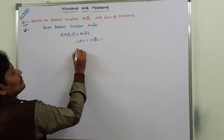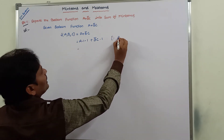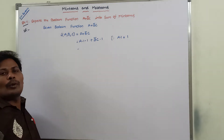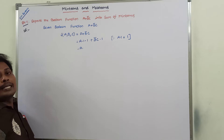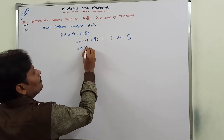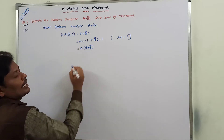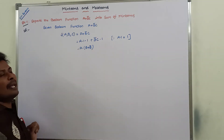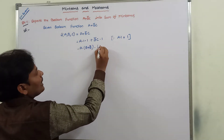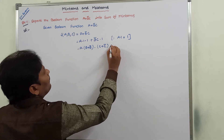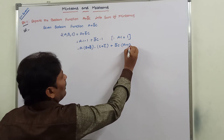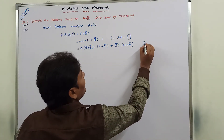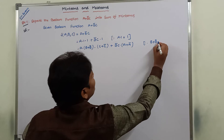We already know that A times 1 equals 1. Now, this 1 can be represented by the sum of the missing variable and its complement. So for missing variable B, that is B plus B-bar. For missing variable C, that is C plus C-bar. For the second term B̄C, the missing variable A gives us A plus A-bar.